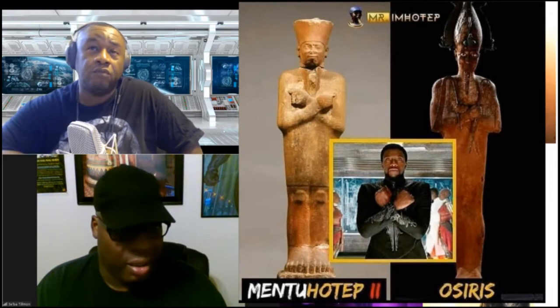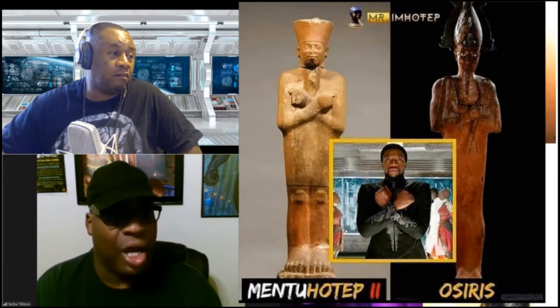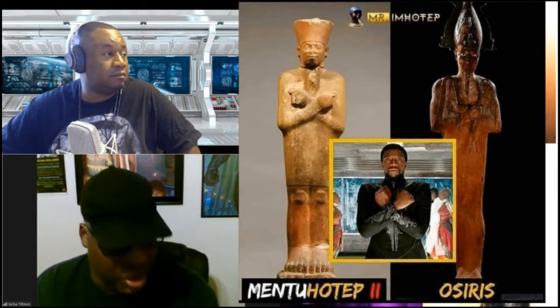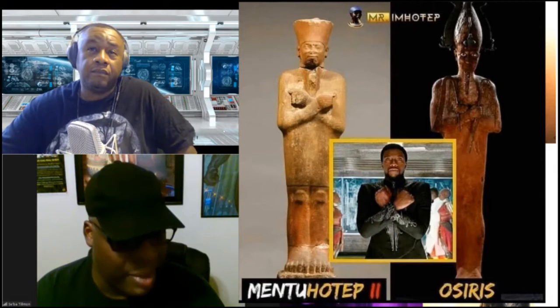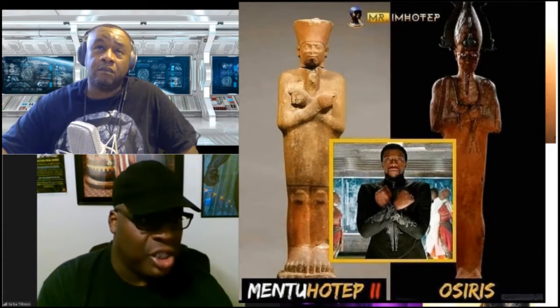That person named Osiris — that's Asar, yes. His name is Wsr; the Greek name is Osiris. And this is actually Mentuhotep — spelled right — Mentuhotep of the 11th dynasty.